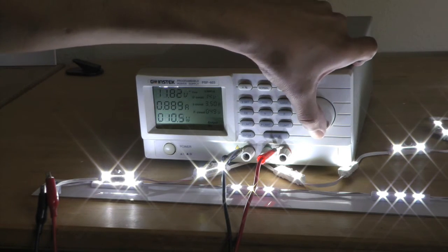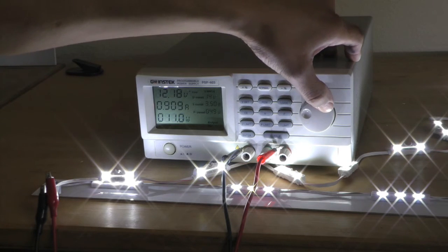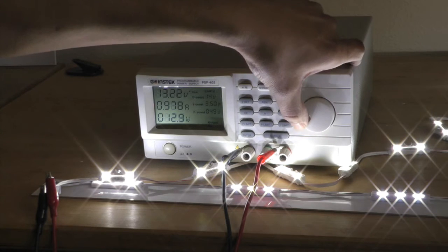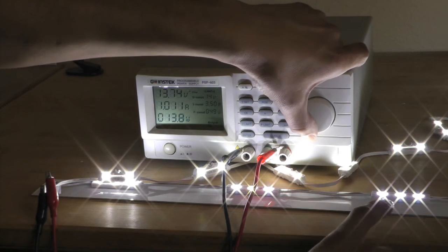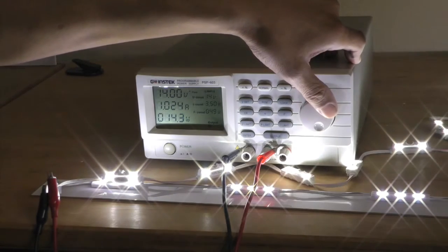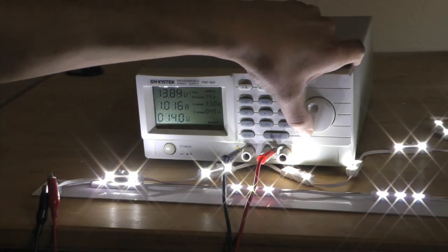So here we are back at 12 volts. And we're going to go brighter. Now these JS LEDs are getting brighter. That's overdriving. And the constant current LEDs are staying the same.